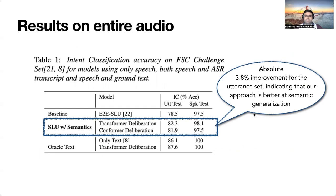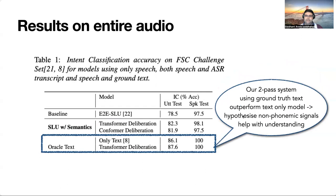Our proposed two-pass SLU system outperforms the acoustic-only SLU system on both FSC challenge utterance and speaker test sets. We observe an absolute 3.8% improvement for the unseen utterance set, indicating that our approach better generalizes to unique phrases of a given intent. This provides evidence that pre-trained language models can enhance the semantic modeling of SLU systems and help bridge the gap between SLU and text-only NLU architectures. We further investigated running our two-pass system using ground truth text and found that our approach outperforms text-only performance, suggesting that speech contains non-phonemic signals like pauses and intonations that can help improve performance.